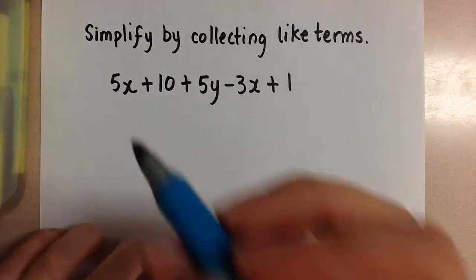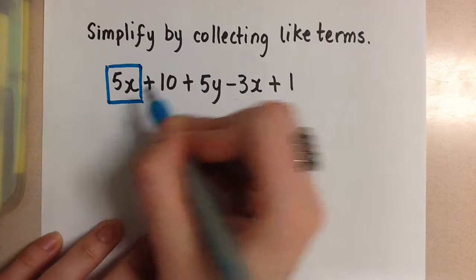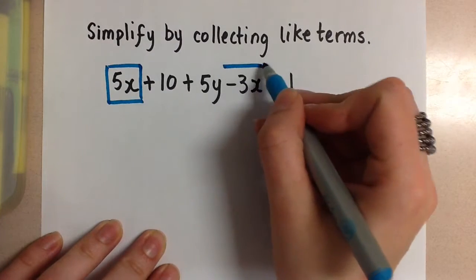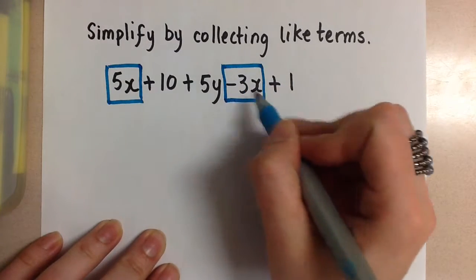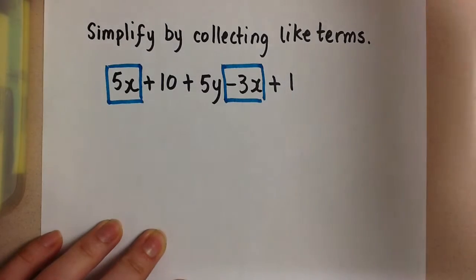So in this polynomial we have a 5x and then a minus 3x. So since both of these have an x variable in them, those are like terms and we're going to combine those together.